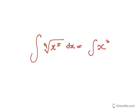So how do you integrate this? First, put it into index form: x to the 5 over 4 dx. Then you get x to the 5 over 4, add 1, and divide by it.